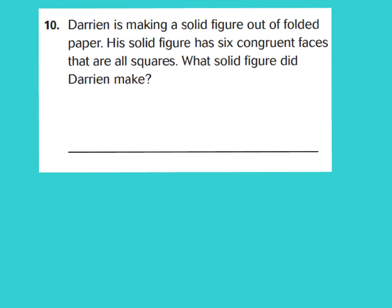Let's read number 10 together. It says: Darian is making a solid figure out of folded paper. His solid figure has six congruent faces that are all squares. What solid figure did Darian make? If a figure has all square faces, that would be an example of a cube, also called a square prism.